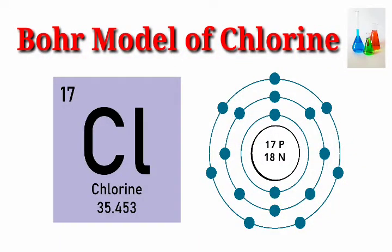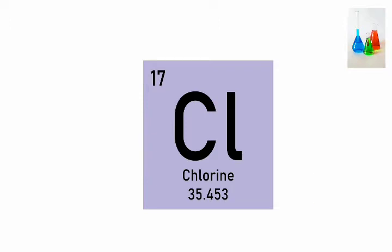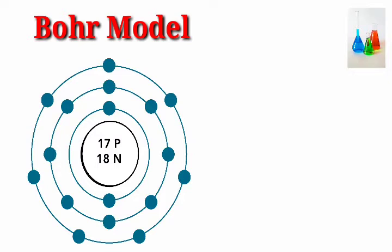Bohr model of chlorine. Atomic number 17. Atomic mass 35.453 atomic mass units.